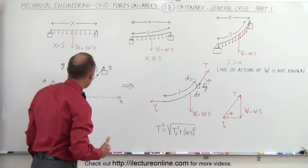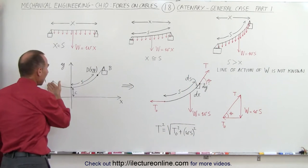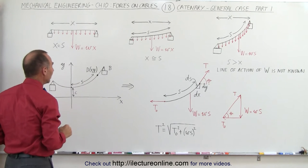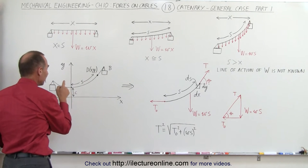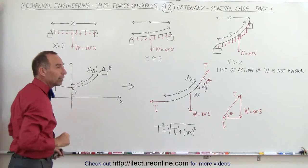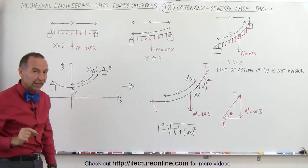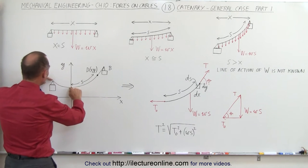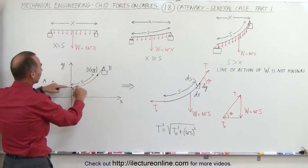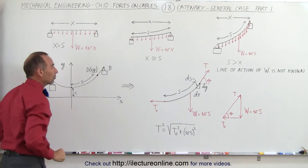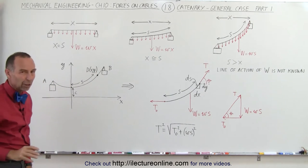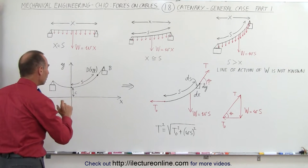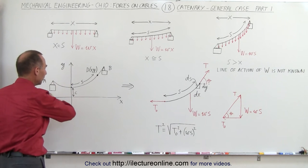What we do know is that when a cable hangs under its own weight, we can find what we call the lowest point on the cable — that's an important point. It will be a certain distance below the attachment on the left side and a certain distance below the attachment on the right side, and we'll get to those things later.